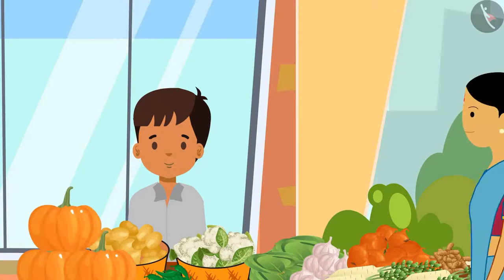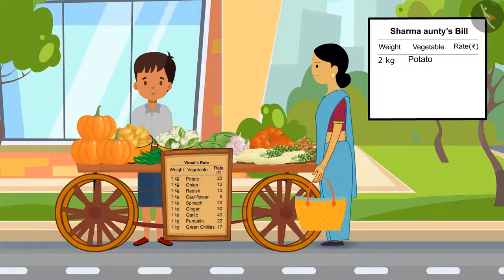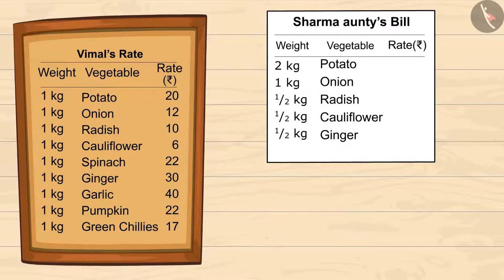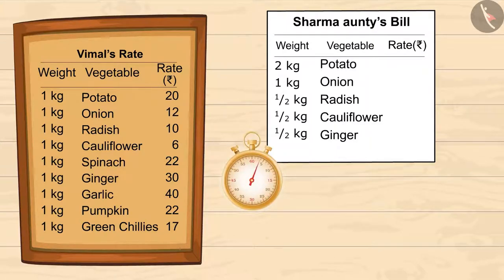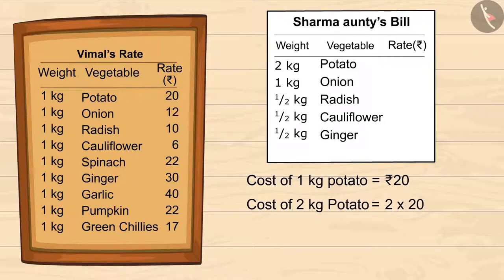Let's see — Sharma auntie is buying some vegetables from him. She bought 2 kgs of potatoes, 1 kg of onions, half a kg of radish, half a kg of cauliflower, and half a kg of ginger. Let's find out the total price of Sharma auntie's purchase. According to Vimal's list, 1 kg of potato costs 20 rupees, so 2 kgs will cost 2 × 20 = 40 rupees. 1 kg of onion is 12 rupees.